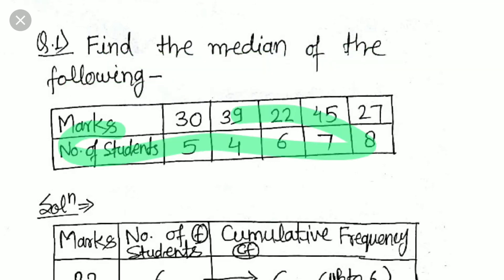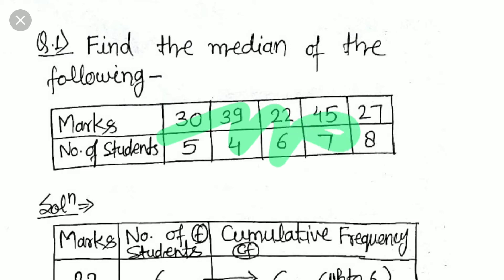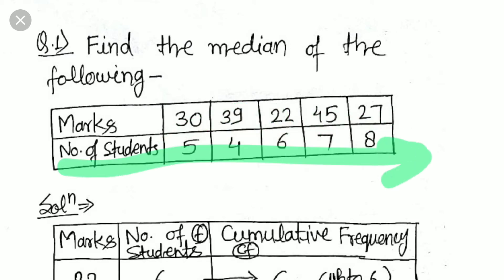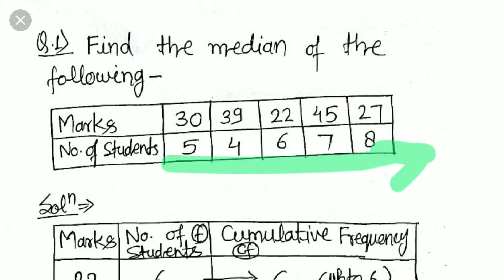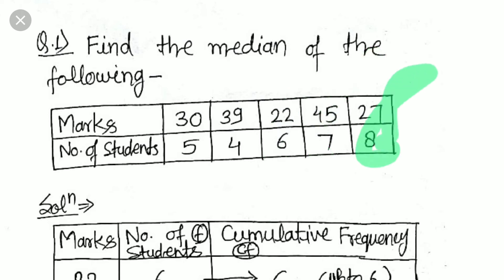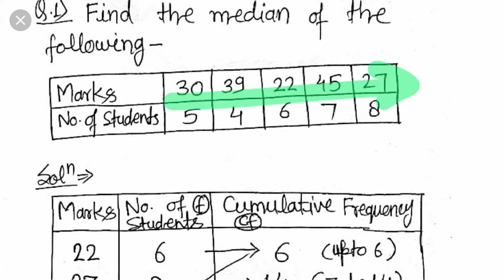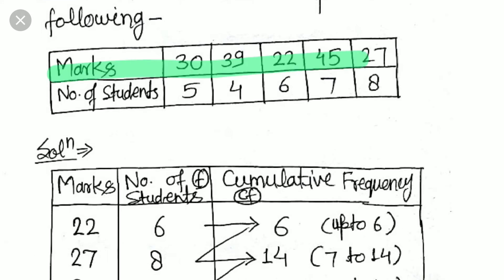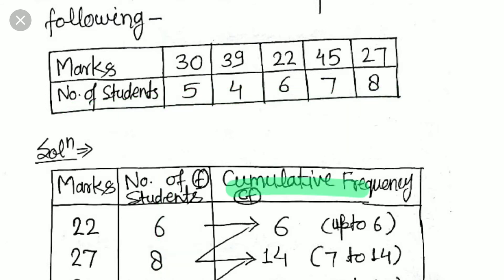Now, find the median from a frequency distribution table. The marks given are 30, 39, 22, 45, and 27, with respective frequencies (number of students): 5, 4, 6, 7, and 8. This means 30 appears 5 times, 39 appears 4 times, 22 appears 6 times, and so on. We first arrange the values in ascending order and build a cumulative frequency table.